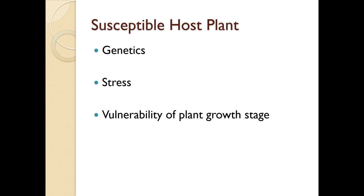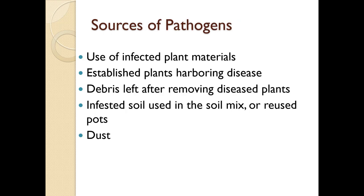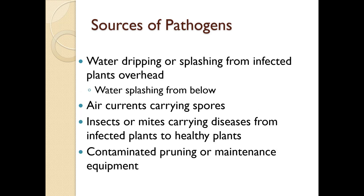Sources of pathogens include other infected plant materials, established plants with diseases, debris left behind, infested soil, reused pots, dust, water dripping and splashing from infected plants, overhead watering splashing from below, air currents carrying spores, insects or mites carrying diseases, contaminated pruning and maintenance equipment, and you yourself can be a vector for certain diseases.